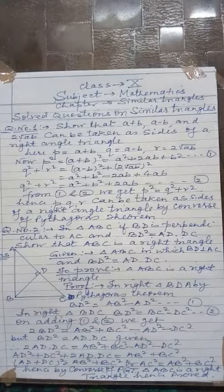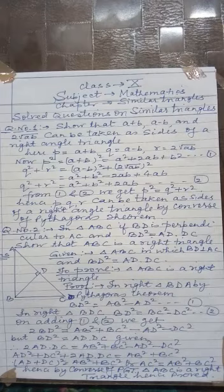Question number 1: Show that (a+b), (a-b), and 2√(ab), where a and b are not equal to 0, can be taken as sides of a right-angle triangle.